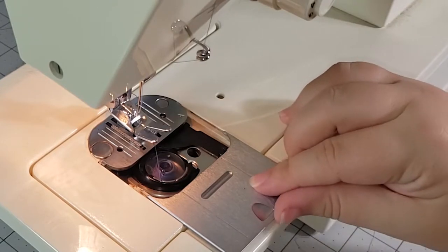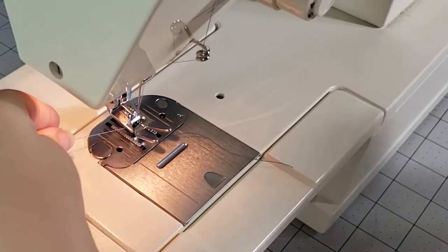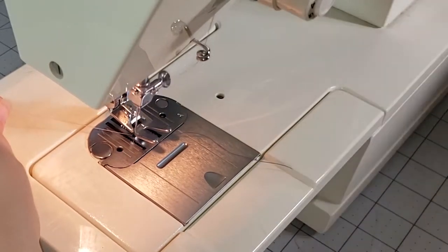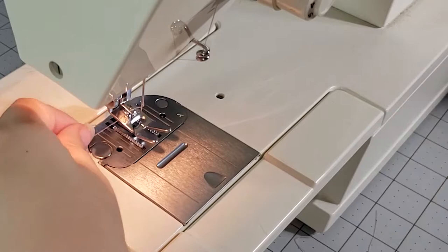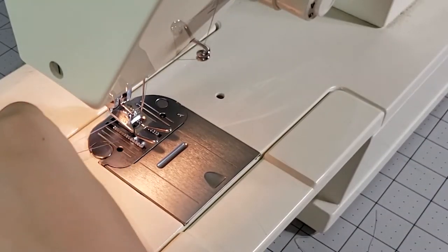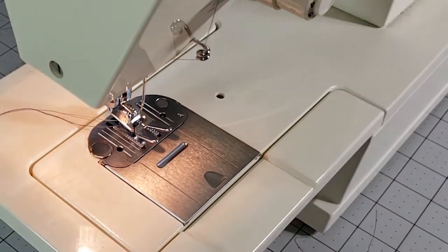Pull the thread across the bobbin, then close the bobbin cover. Hold the upper thread taut in one hand and turn the hand wheel towards you. A little loop of bobbin thread will pop up. Pull the bobbin thread out and lead both threads toward the back of the machine. Now you're ready to sew!